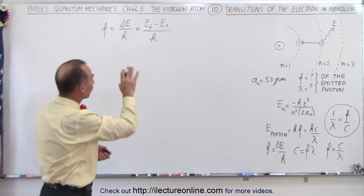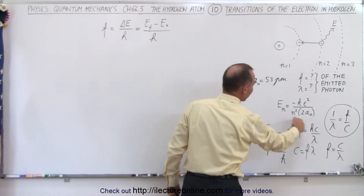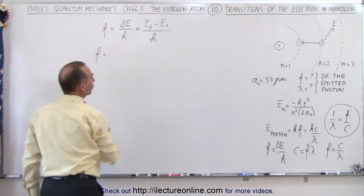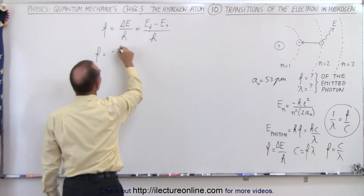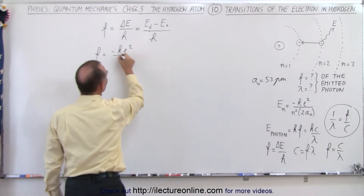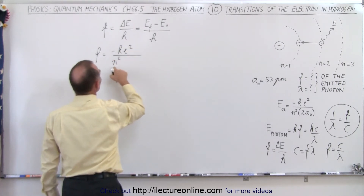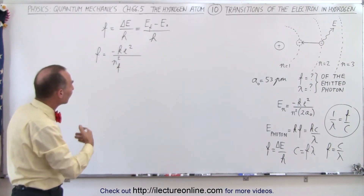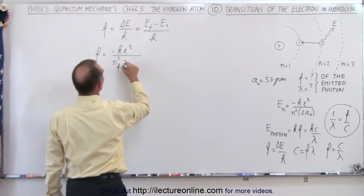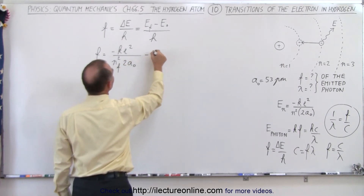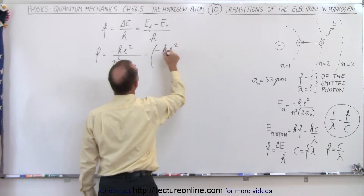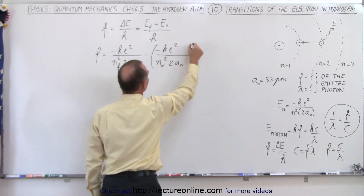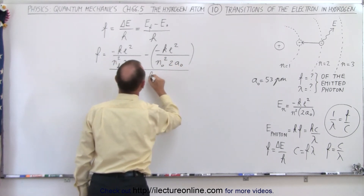Now let's plug in what those energies are equal to. The frequency equals the final energy, which is minus k e squared divided by n final squared times 2a sub nought, minus — minus k e squared divided by n initial squared times 2a sub nought — with the whole thing divided by h.